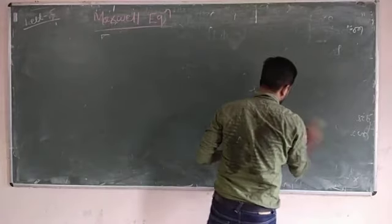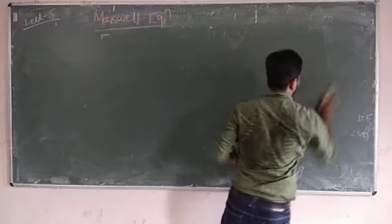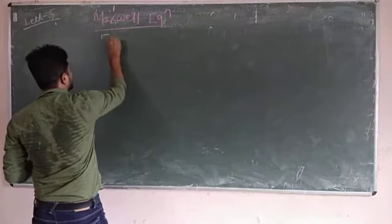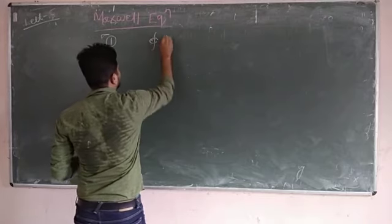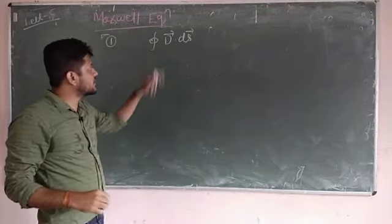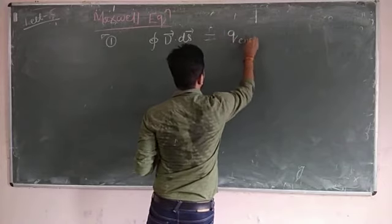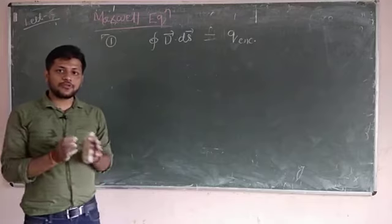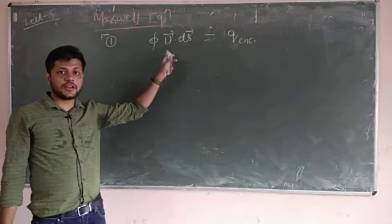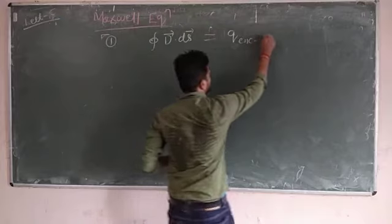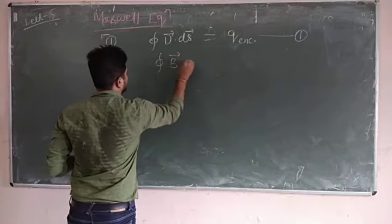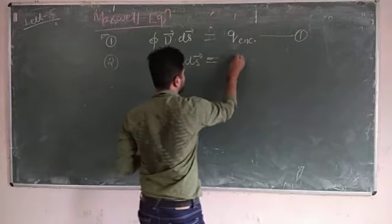To summarize all four Maxwell equations: the first equation is the surface integral of electric flux density D equal to the enclosed charge Q. The amount of charge coming out of a closed surface equals the surface integral of electric flux density. The second equation is Gauss's law for magnetism — the surface integral of magnetic flux density B is always equal to zero. The significance is that isolated magnetic poles do not exist; north and south poles always exist together in magnetic materials.